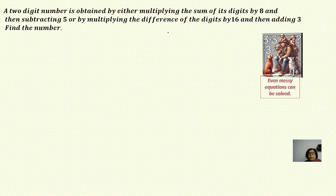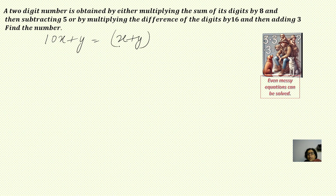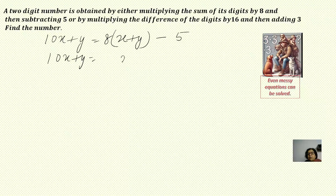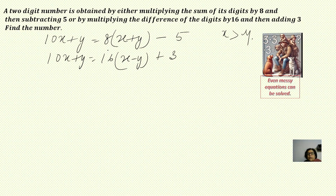The next question: a two-digit number is obtained by either multiplying the sum of its digits by 8 and then subtracting 5, or by multiplying the difference of the digits by 16 and then adding 3. Find the number. Taking the two-digit number as 10x plus y, where x is the tens digit and x is greater than the units digit y: first equation is 10x plus y equals 8 into x plus y minus 5; second equation is 10x plus y equals 16 into x minus y plus 3.